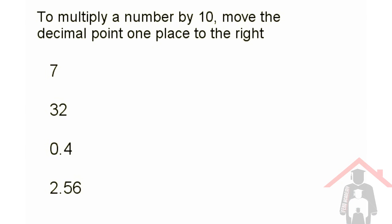To multiply a number by 10, we're going to move the decimal point one place to the right. The first thing we need to do is find the decimal point. If you can't see it, it's at the end of the number, so the decimal point is here for this question.